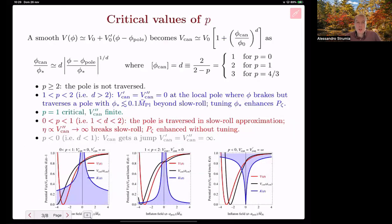We assume that the potential is smooth around the pole, so it's approximated as first order Taylor series. Next, the canonicalization around the pole acts in this way with some power d related to the power p. As a consequence, around the pole, the canonical potential acquires a non-trivial power.